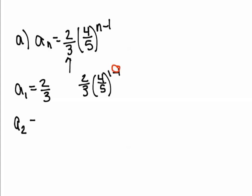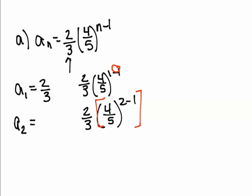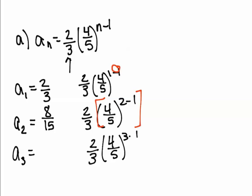For A2, take 2/3 times 4/5 to the power of 2 minus 1. Make sure you're careful with your order of operations — do the exponents first. You should end up with 8 over 15. Then plug in 3 to your formula to find the third term, and you should end up with 32 over 75.